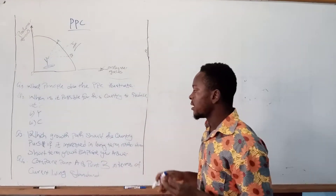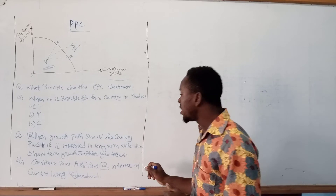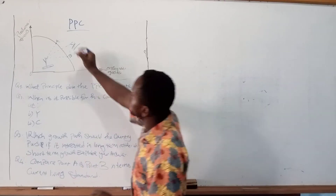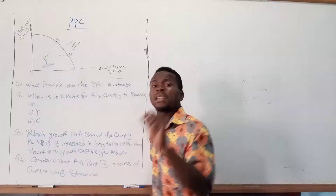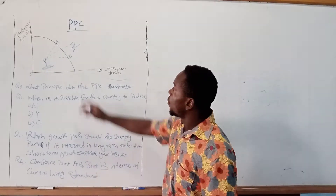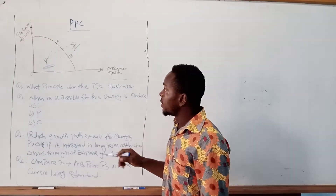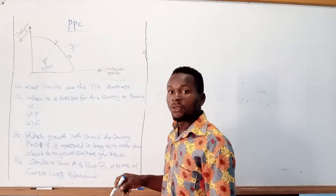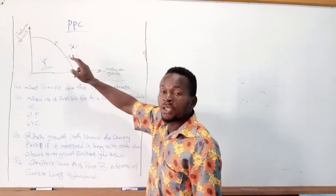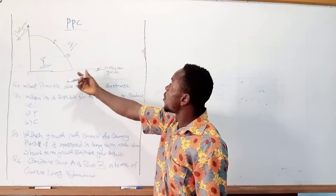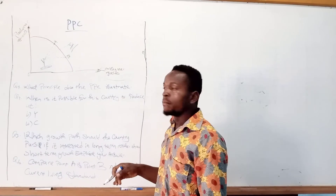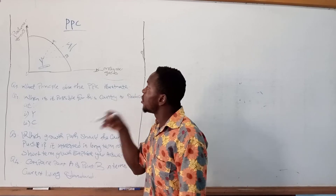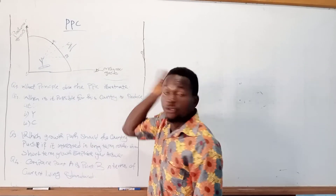On the last part of the question, they ask you to compare Point A and Point B in terms of current living standards. At Point B, the country produces more consumer goods, so the living standard at Point B is high. At Point A, the current living standard is very low because they are producing more capital or producers goods.